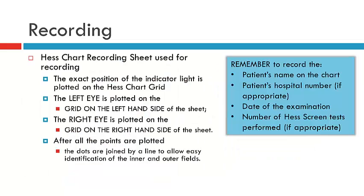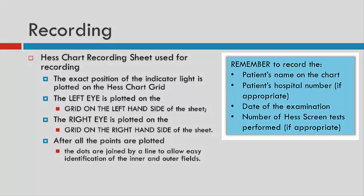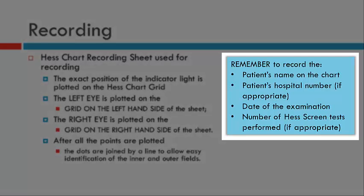A summary of key points: always record the patient's name, the date, a UR number if they're part of a hospital system, and if repeating HES charts, indicate which number in the series — number one being the first, number two the second, and so on. This allows you to map the change in ocular movements over time.